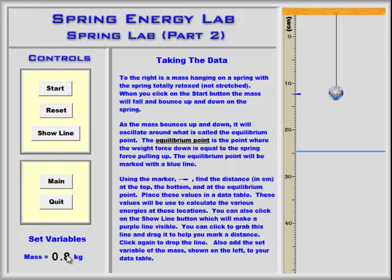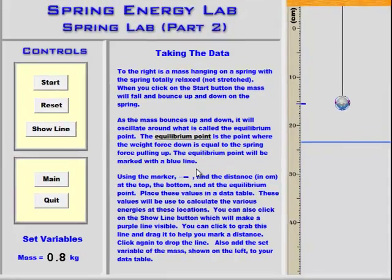Here we're going to have a mass on a spring that will start to bounce up and down. Then we can stop and start it until we find the exact measurements for the minimum, maximum, and equilibrium distance.